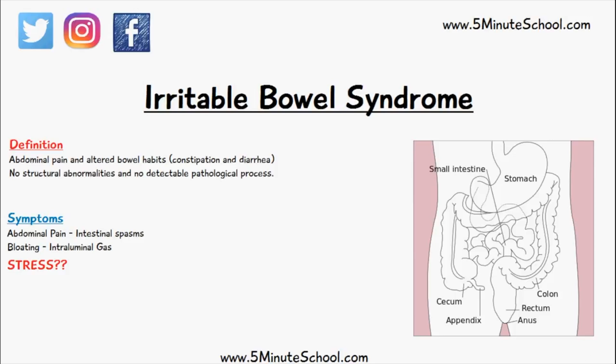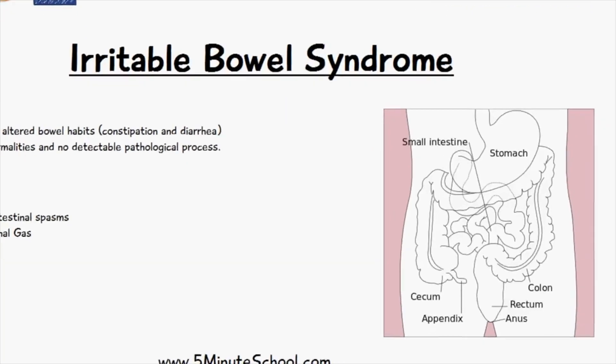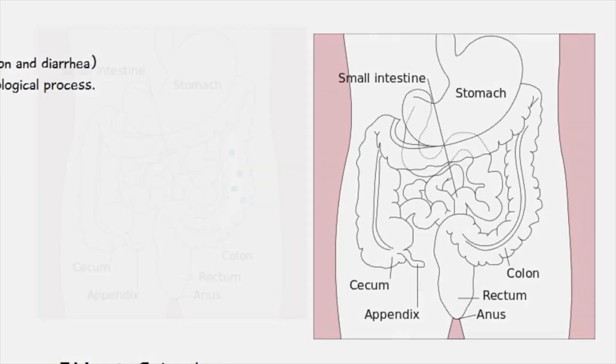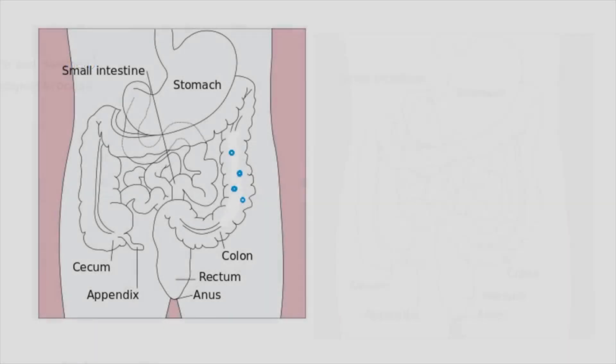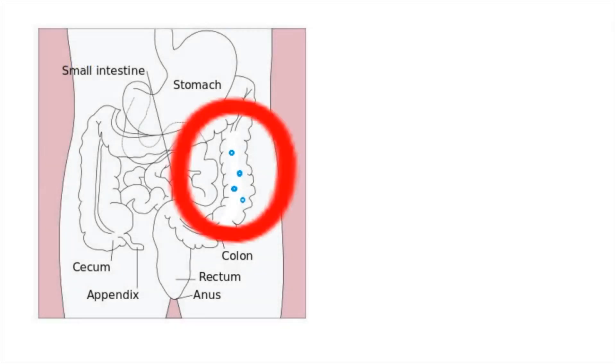The symptoms of irritable bowel syndrome include abdominal pain, which is largely due to intestinal spasms. Other symptoms include bloating, which is due to intraluminal gas.